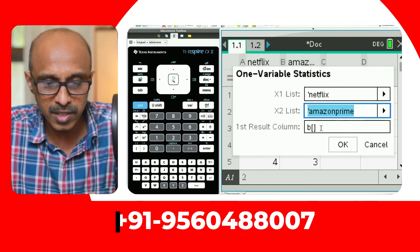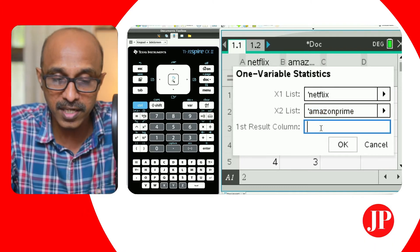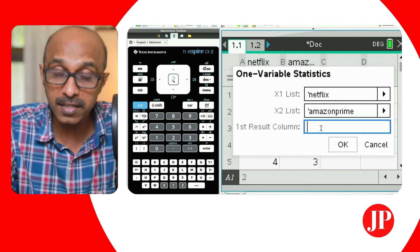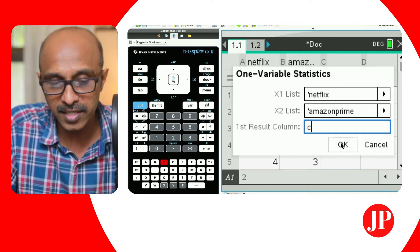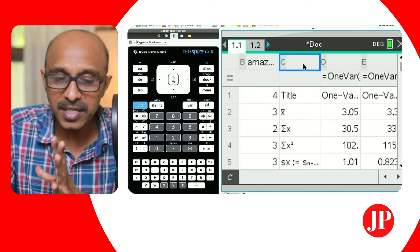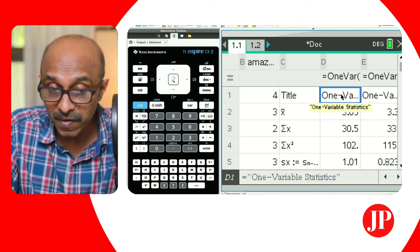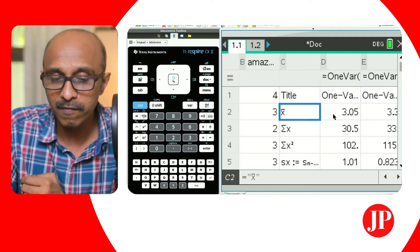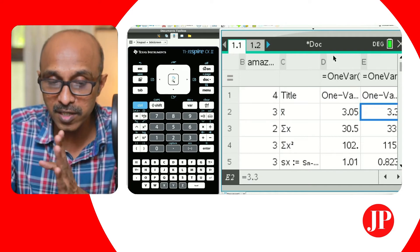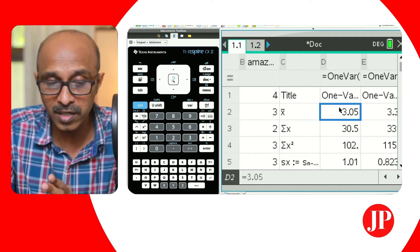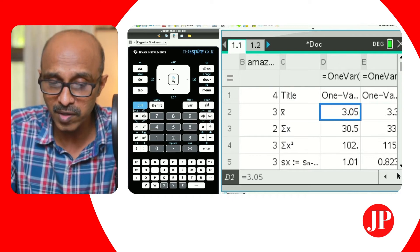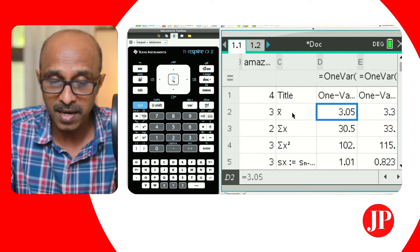And the first column results, this actually indicates where the results have to be displayed. We'll start from column C and say okay. And as you can see that our results are displayed from column C, title is one variable statistics and X bar for both those columns. The first column D, we've got the statistics for Netflix and on column E we've got the statistics for Amazon Prime.